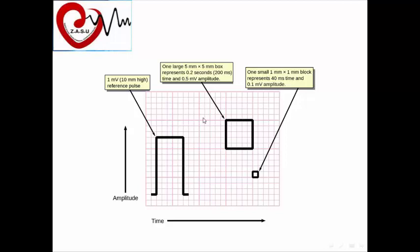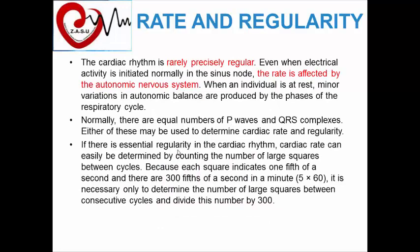At any ECG paper, we must first look at the calibration. This calibration must be 10 millimeters in height as a reference for standard calibration. If you want it half or more than that, it will be shown on the ECG paper. It must be the first thing you look at on your ECG paper, to determine the normal voltage of the waves you will get in this ECG.